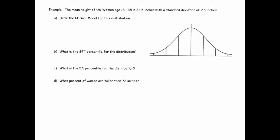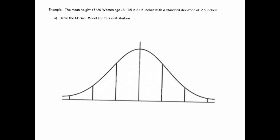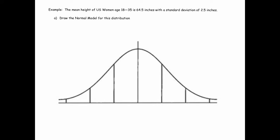Draw the normal distribution. So we have the picture here. I'm going to zoom in for a second. I'm going to draw the mean in the middle, 64.5 inches. Now the standard deviation is 2.5 inches, so let's add 2.5 to get to one standard deviation above the mean.